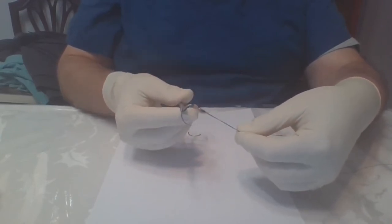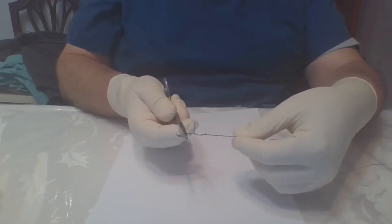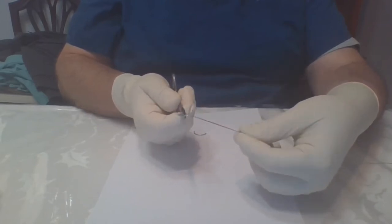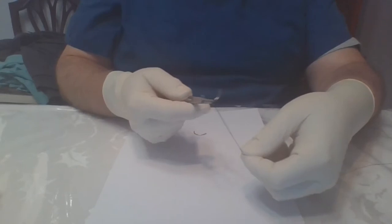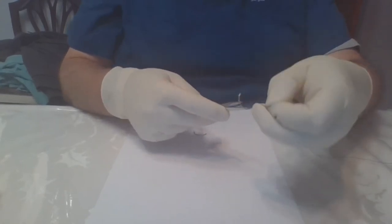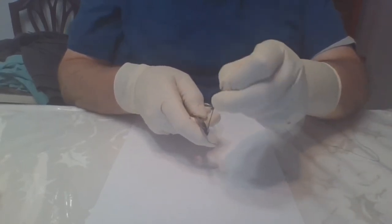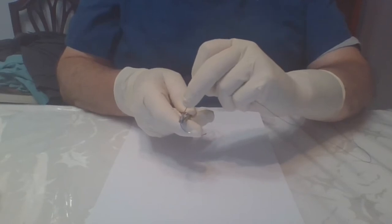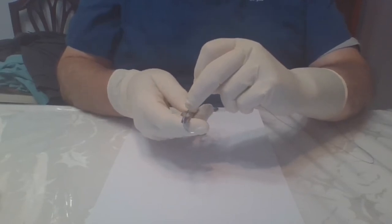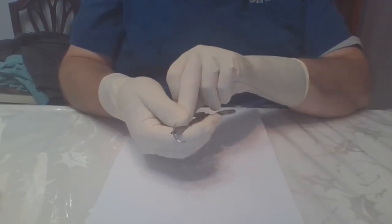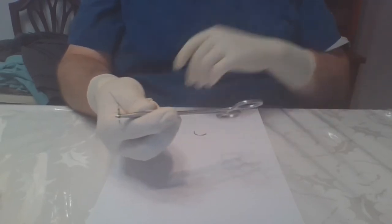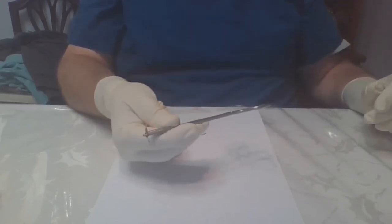Now turn the needle driver so that the suture goes under the needle. Then bringing it in front, up, and over, and then into the jaws of the needle driver right there into the tip. And then just pull that on through and you've got it ready to pass.